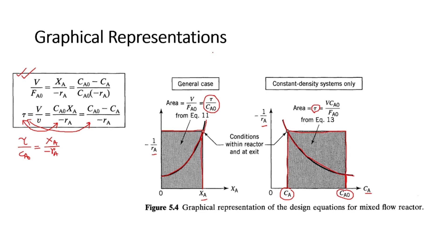To summarize: if given data points with respect to mass fraction x_A, plot the first curve to get the residence time; if given data points with respect to concentration of A, plot the second curve to get the residence time. These are the graphical methods to determine residence time. We will solve problems later by which you can easily find out how to calculate the residence time.